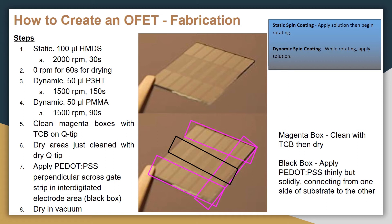Step 6: Dry the areas you have just cleaned with a dry Q-tip. Step 7: Apply PEDOT:PSS perpendicular across the gate strip as indicated by the black box. Step 8: Dry in a vacuum.